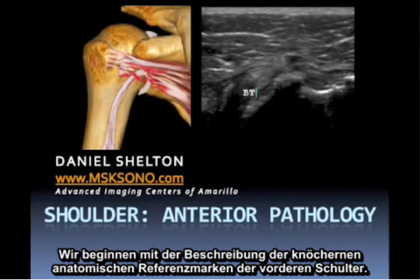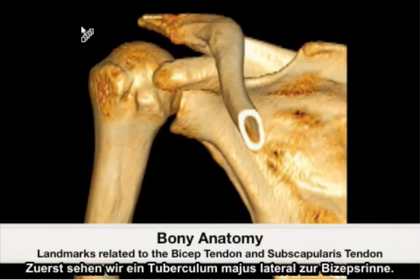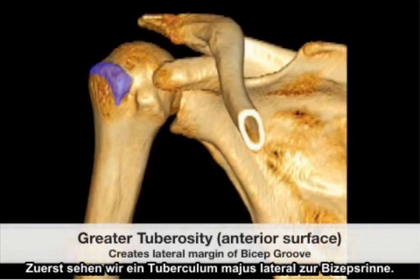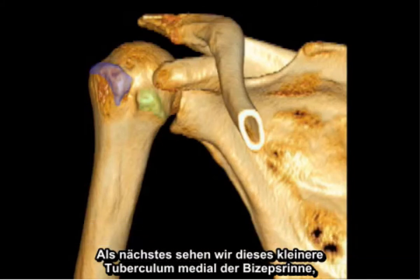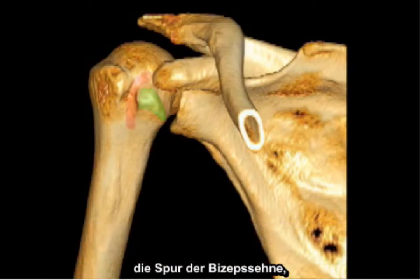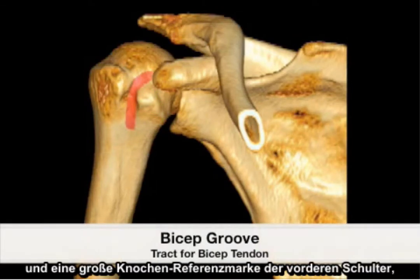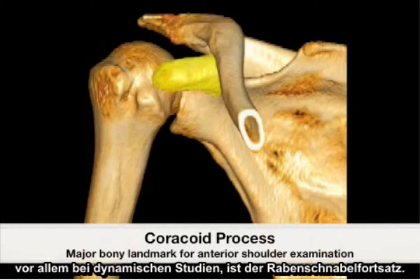We'll begin by describing the bony anatomical landmarks associated with the anterior shoulder. First, we have the greater tuberosity located lateral to the bicipital groove. Next, we have the lesser tuberosity located medial to the bicipital groove. And finally, we have the bicipital groove itself, which is a tract for the bicep tendon. A major bony landmark associated with the anterior shoulder, especially in dynamic studies, is the coracoid process.